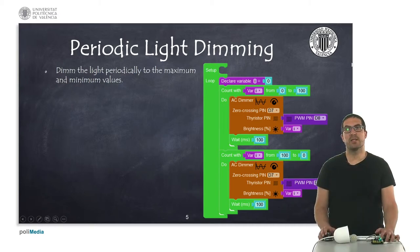In this first example, I have connected the circuit I have explained. We have the AC light dimmer and we have an LED lamp, and the example in which we are creating a periodic light dimming.